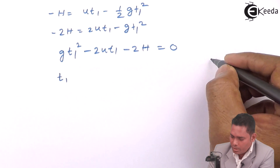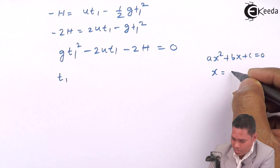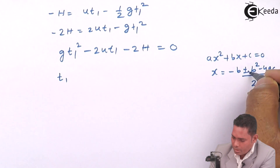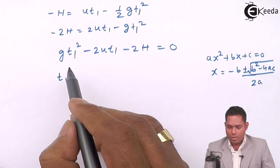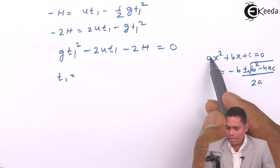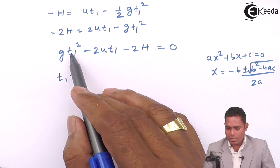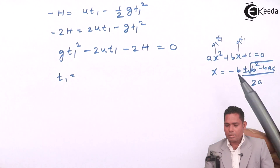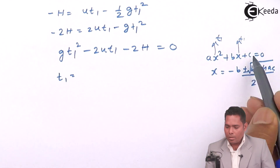Applying the quadratic formula x = (−b ± √(b²−4ac)) / 2a to solve for t1: here a = g, b = −2u, and c = −2h. We take only the positive root since time cannot be negative. So: t1 = (2u + √(4u² + 8gh)) / (2g).